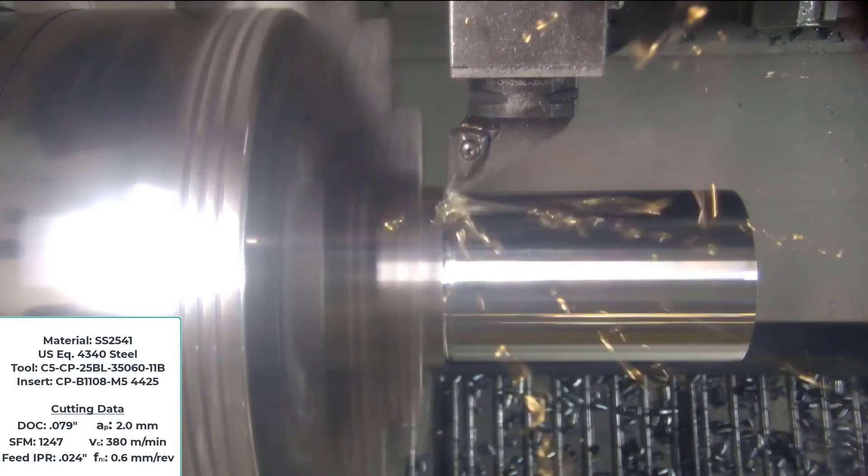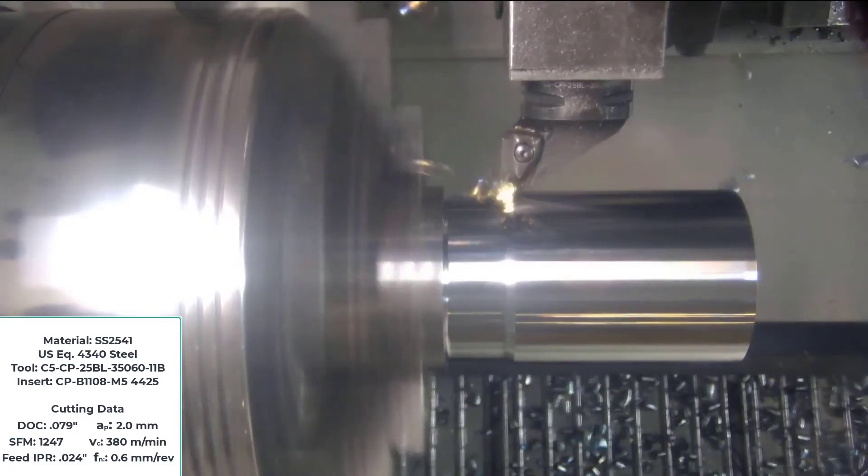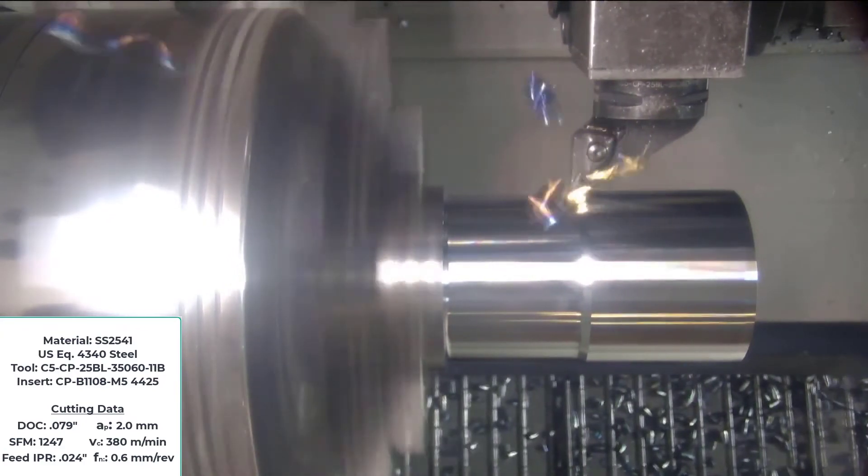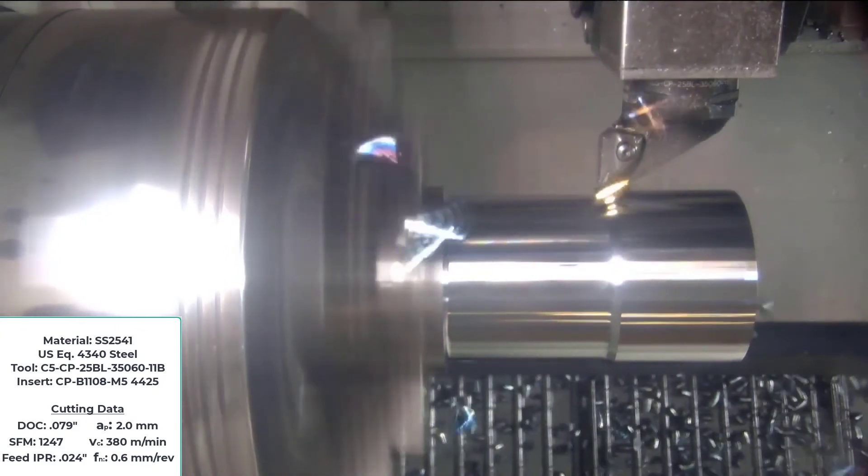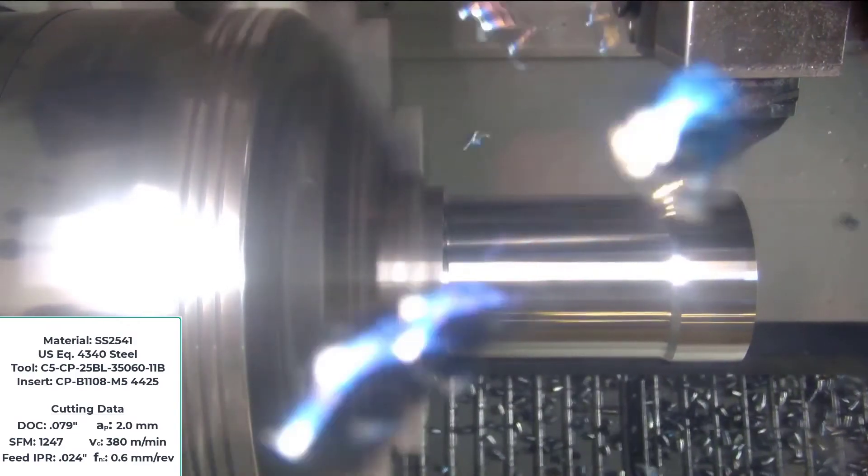The process leverages specially designed tools, including a B-type insert used here for roughing the part. In addition, special tool paths are used to achieve the prime turning effect.